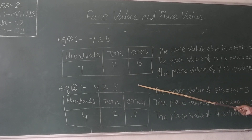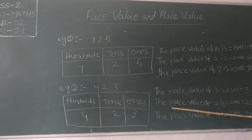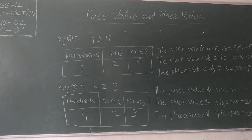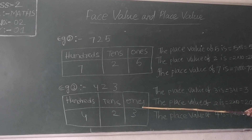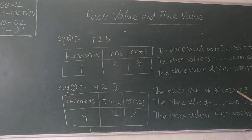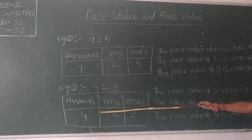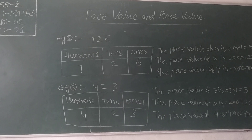Now see the example 423. In 423, the place value of 3: 3 is in the 1s place, so 3 × 1 = 3. The place value of 2: 2 is in the 10s place, so 2 × 10 = 20. The place value of 4: 4 is in the 100s place, so 4 × 100 = 400.